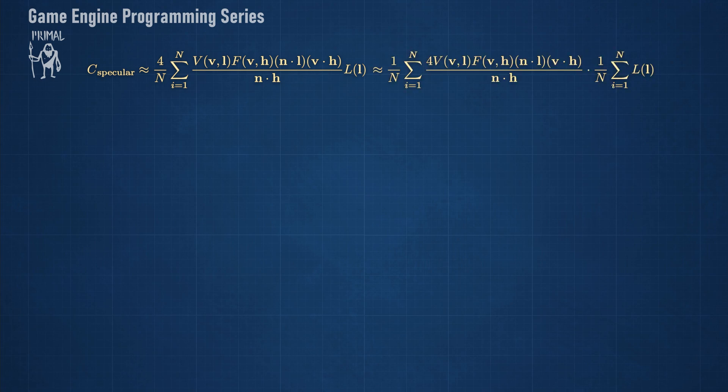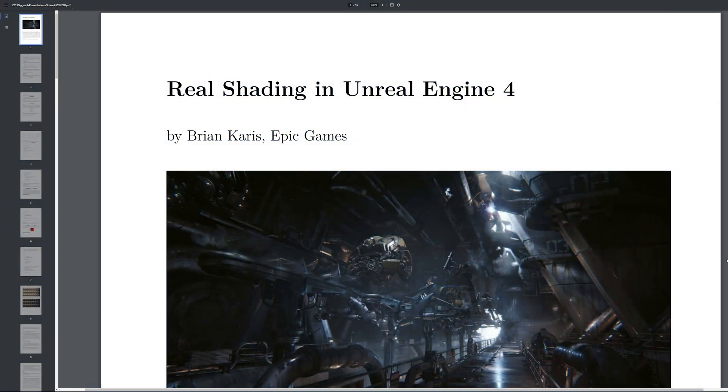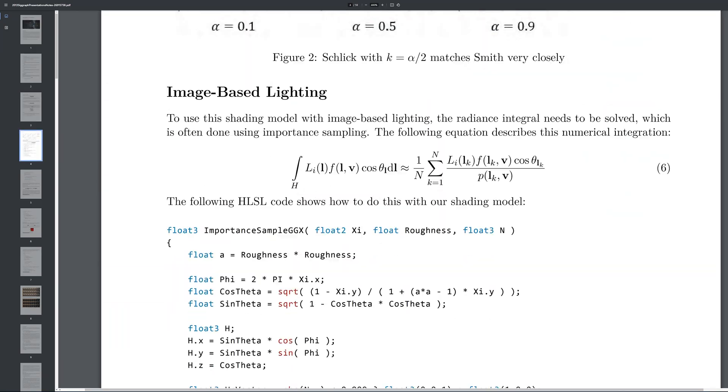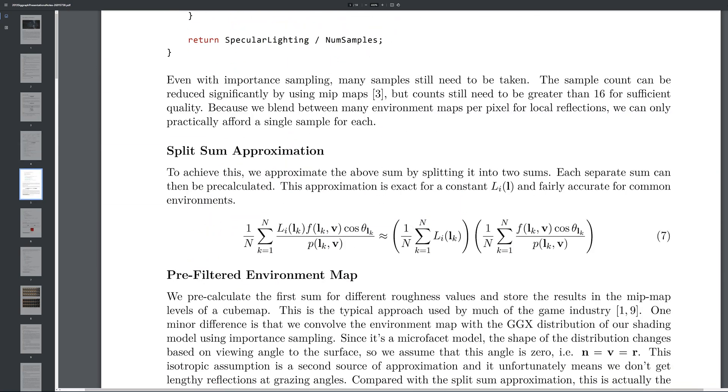One solution to this is to approximate the sum by splitting it into two sums. The most notable resource that almost everyone refers to when implementing IBL is a paper from 2013 by Epic Games called Real Shading in Unreal Engine 4. This solution is known as the split sum approximation.